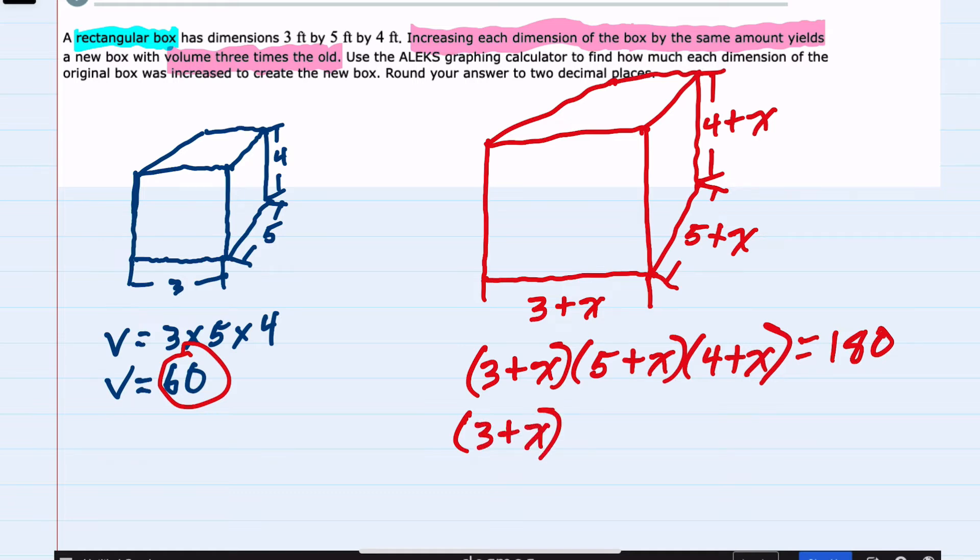We set this equal to 0 by subtracting the 180 over to the left-hand side. So subtracting 180 on the left, we would then have 0 on the right-hand side. I don't need to simplify the left-hand side since I'm using a graphing calculator.